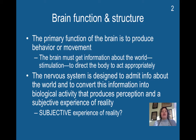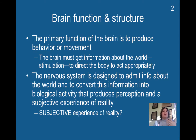The primary function of the brain is to produce behavior and movement. The brain must get information about the world to direct the body to act appropriately. We often think of our senses as perceiving the world, which of course they are, but that perception is really to inform our brain. There's a much more active process involved in perception. The nervous system is designed to admit information about the world and to convert this information into biological activity that produces perception and the subjective experience of reality.